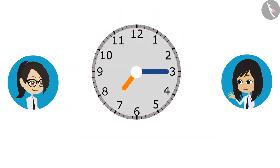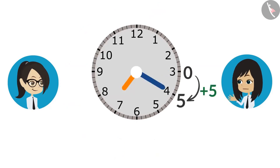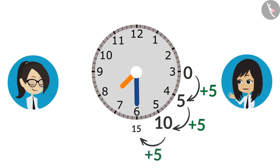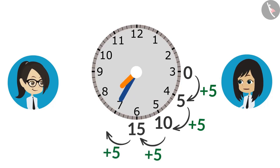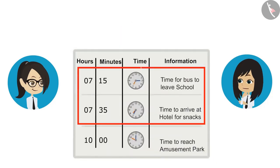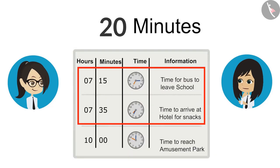When the minute hand is at 3, we will consider that time as 0. It takes 5 minutes to reach 4, 10 minutes to reach 5, 15 minutes to reach 6, and 20 minutes to reach 7. This means the bus is taking 20 minutes from school to reach the hotel.